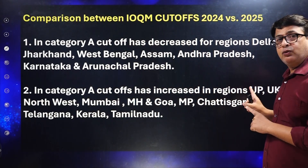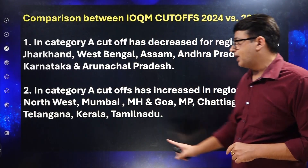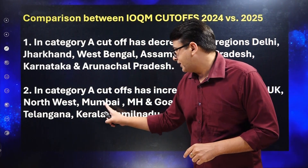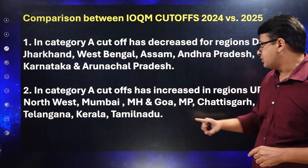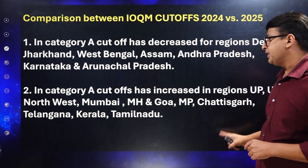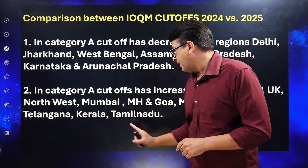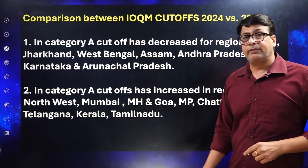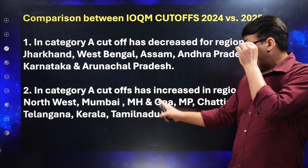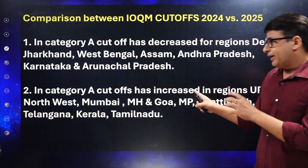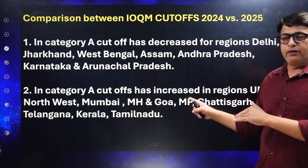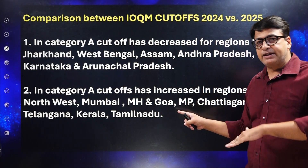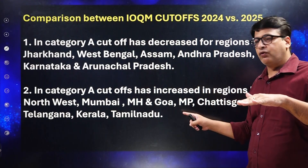In Category A, the cutoff increased in: Uttar Pradesh, Uttarakhand, Northwest, Mumbai, Maharashtra, Goa, Madhya Pradesh, Chhattisgarh, Telangana, Kerala, and Tamil Nadu. These are the regions where the IOQM 2025 cutoff increased compared to 2024.